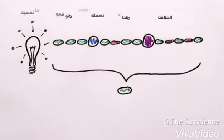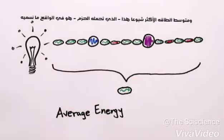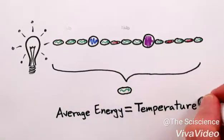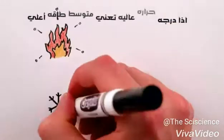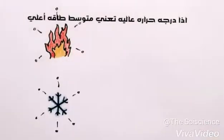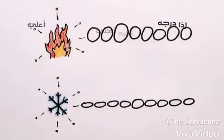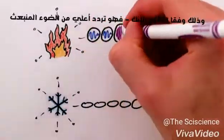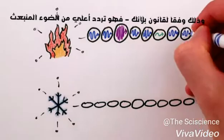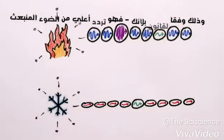This common average energy that the packets carry is in fact what we mean by temperature. So a higher temperature just means higher average energy, and thus by Planck's rule, a higher frequency of light emitted.